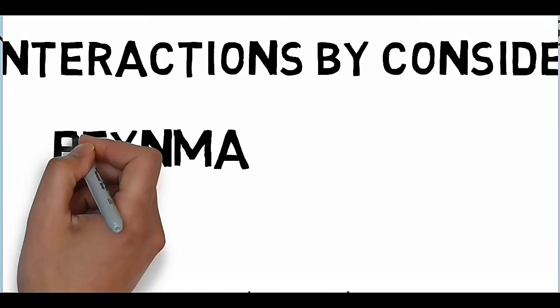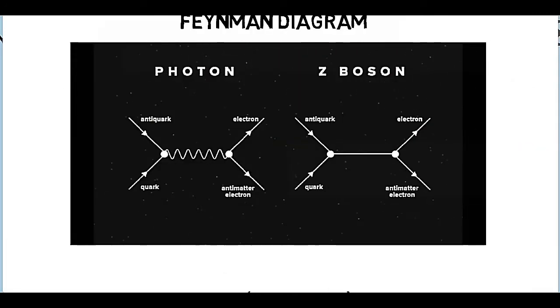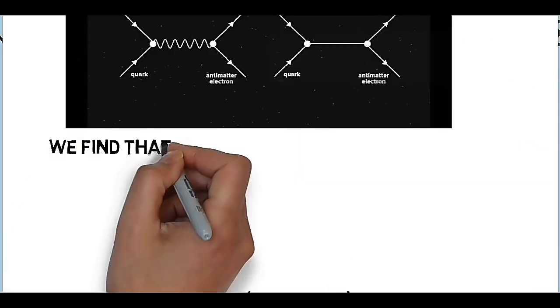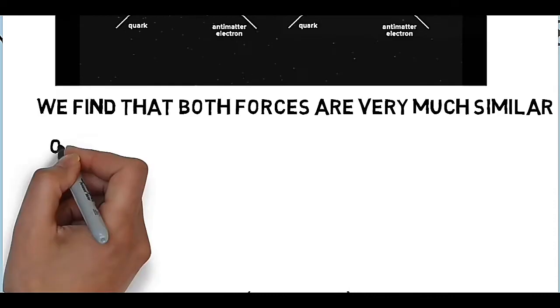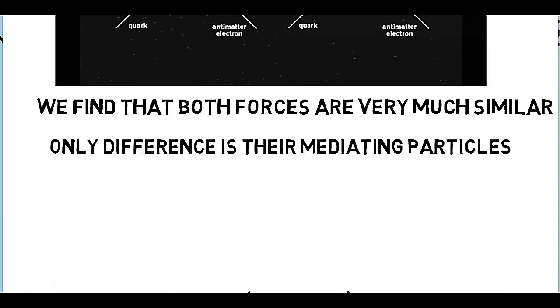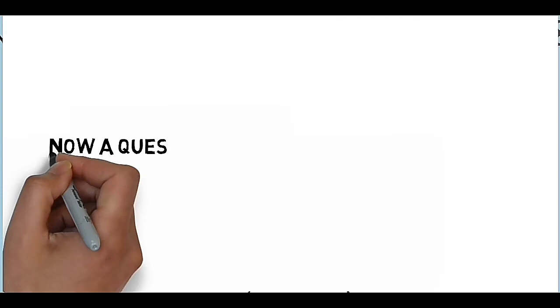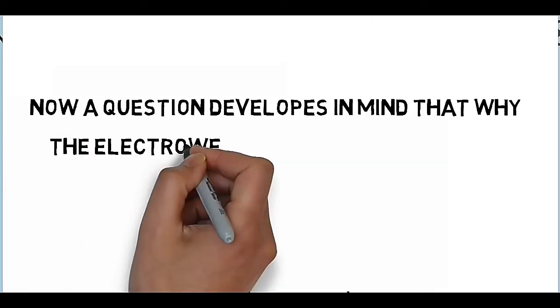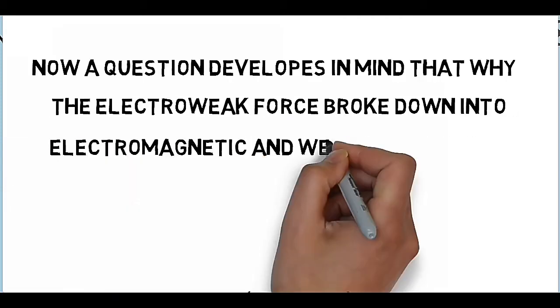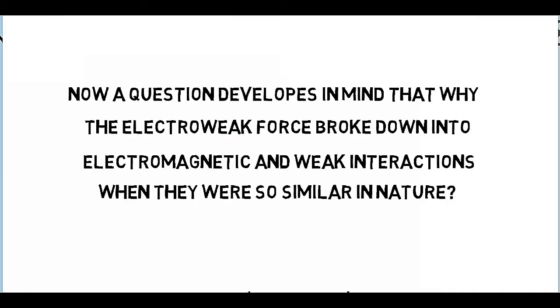If we have a look at electromagnetic and weak interactions by considering their Feynman diagram, we find that both forces are very much similar, the only difference being their mediating particles. Now the question develops in mind: why did the electroweak force break down into electromagnetic and weak interactions when they were so similar in nature? Let's see.